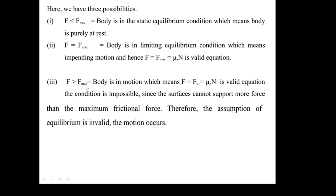The third condition is when F is greater than F_max — the body is in motion, and kinetic friction applies. Here, F_k equals mu_k times N, where mu_k is the coefficient of dynamic or kinetic friction. The surfaces cannot support forces greater than the maximum frictional force, so when the applied force exceeds the limiting frictional value, motion occurs.